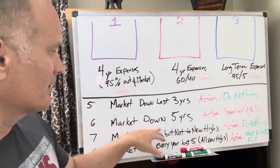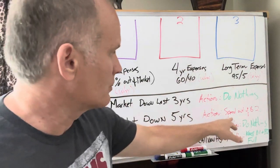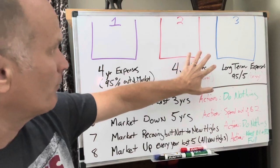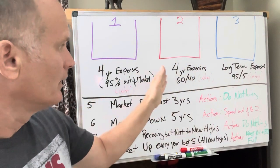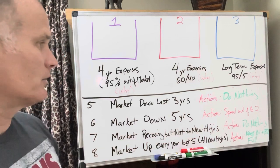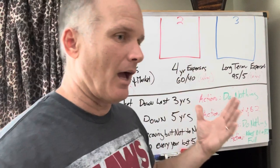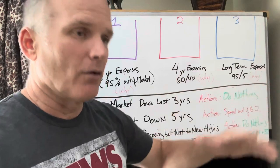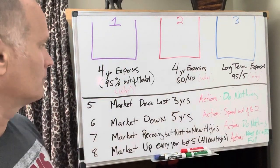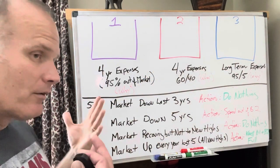Example number six, market is down for five years. So what action should you take? You just start spending out of bucket two. You don't move all of bucket two over to bucket one. You just start spending out of bucket two. That's just what you do. So it's been down for five years. Think about what's going to happen. It's probably going to turn, or has already started turning right there. So bucket one's empty. Start spending out of bucket two. That's what you do.